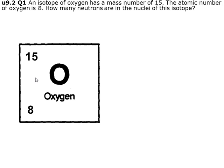So this is the isotope of oxygen. That's the atomic number, and that's the isotope mass number. We know the mass number is 15, the atomic number is 8, and we're trying to find the number of neutrons in this isotope.